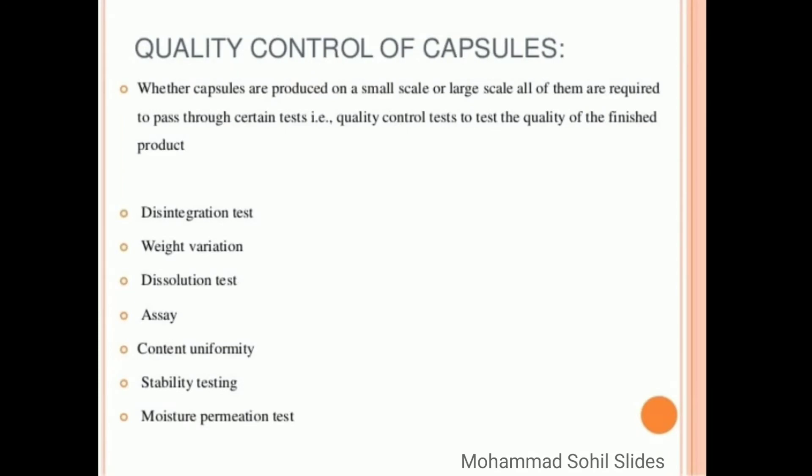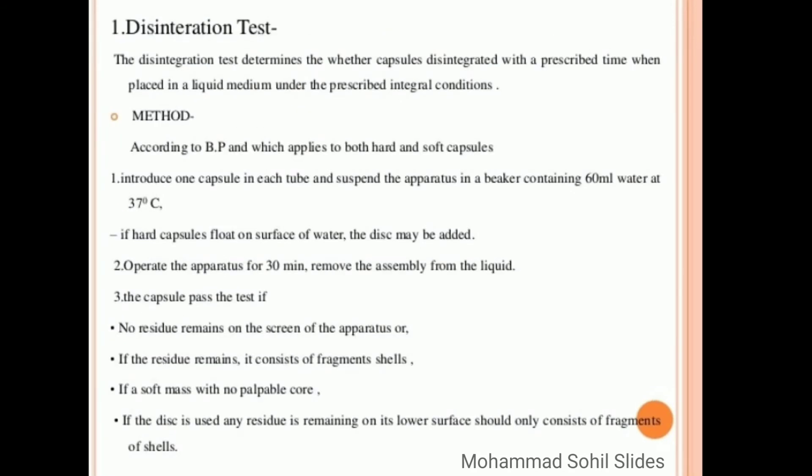Them are required to pass through certain tests, that is quality control tests, to test the quality of the finished product. First test is disintegration test, second weight variation, third dissolution test, fifth assay, sixth content uniformity, seventh stability testing, and last is moisture permeation test. First is disintegration test. The disintegration test determines whether capsule disintegrated within the prescribed time when placed in a liquid medium under the prescribed integral conditions.